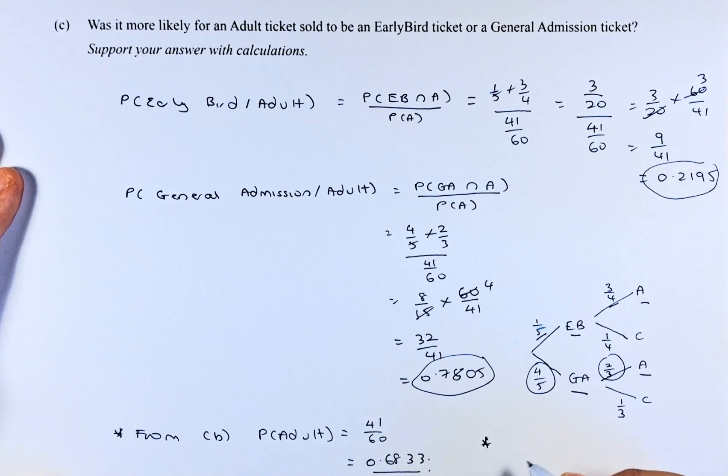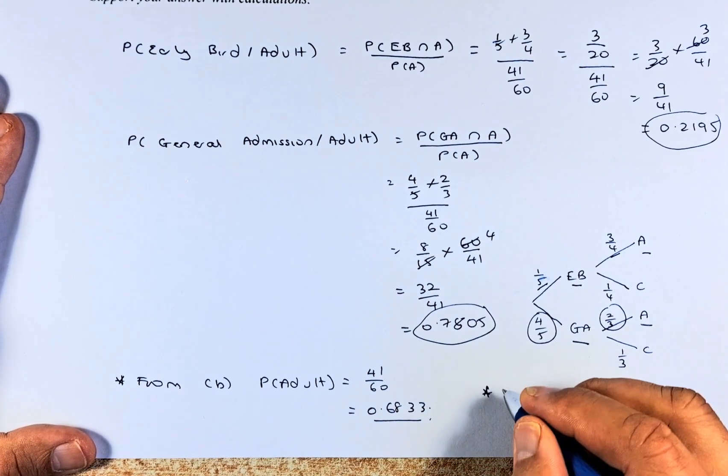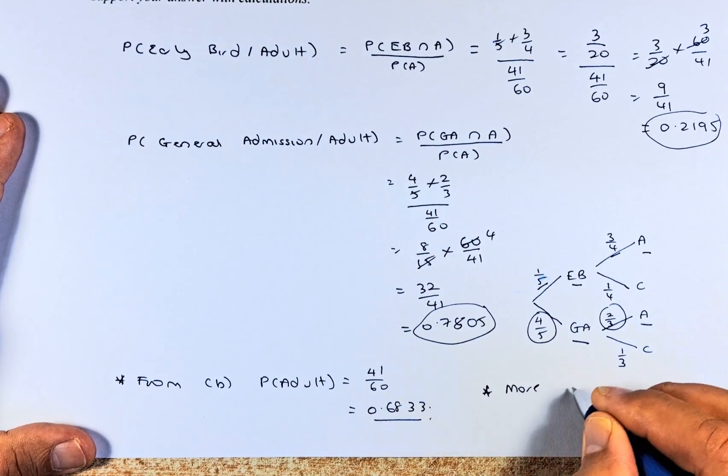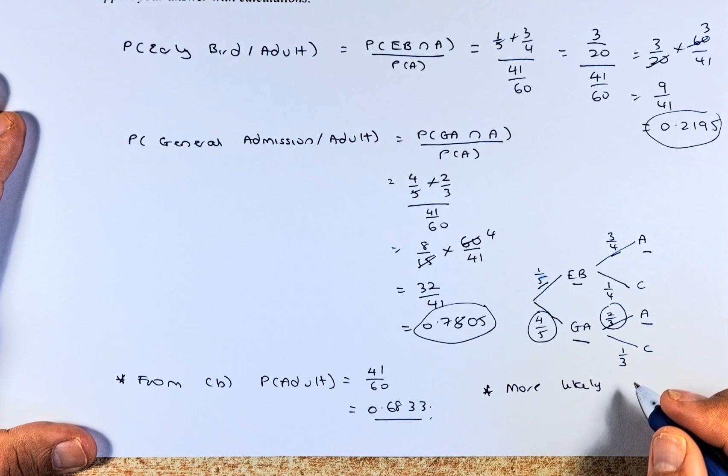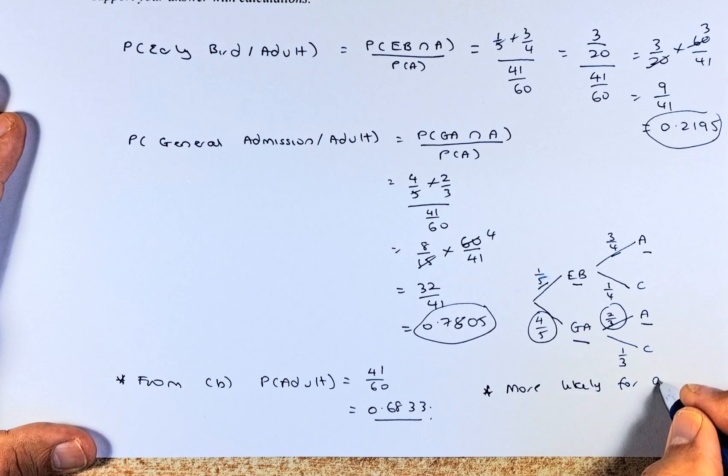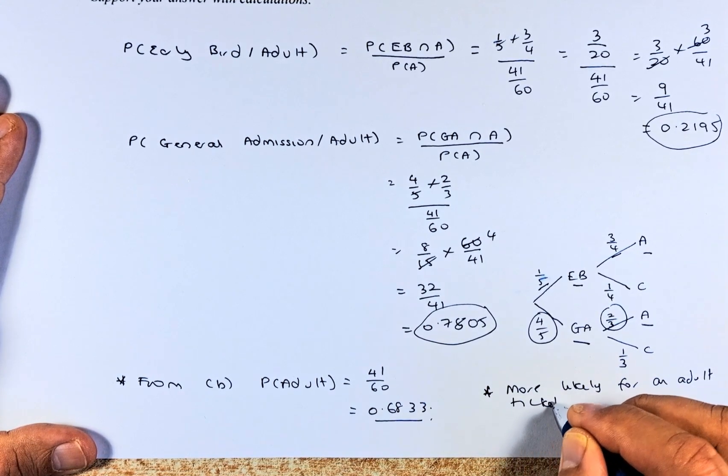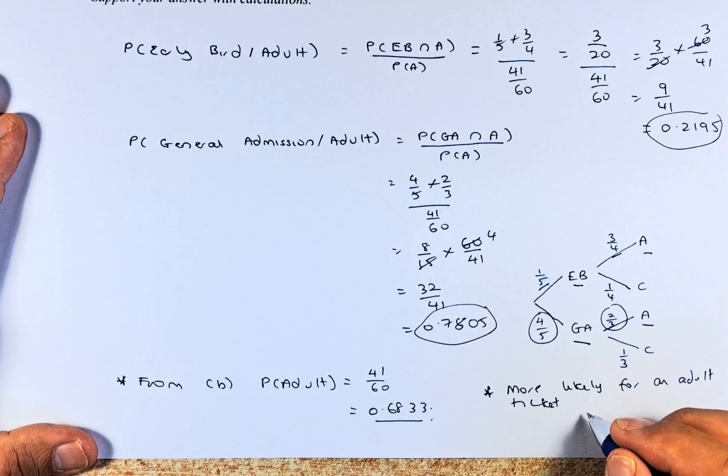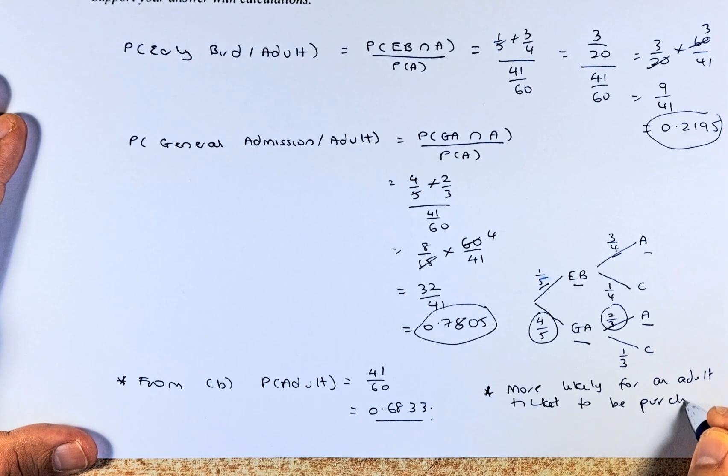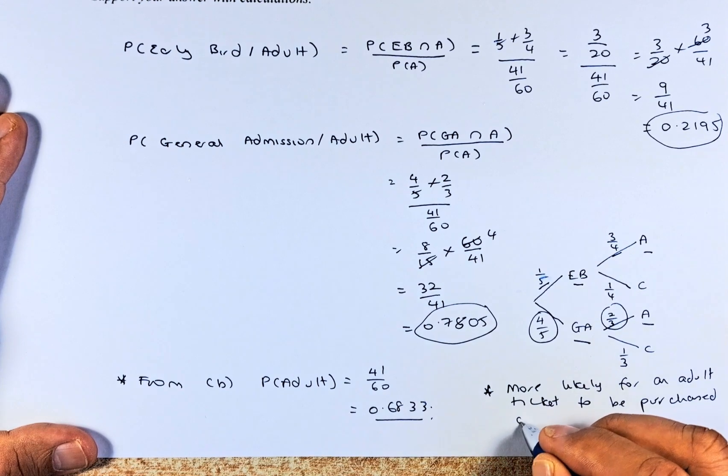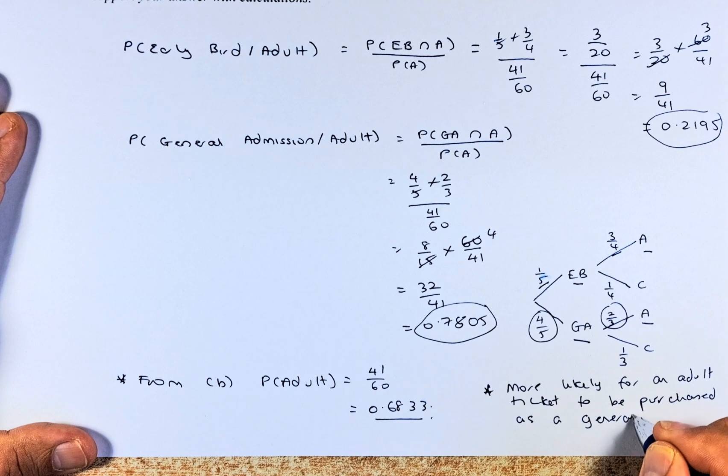The answer is: it is more likely for an adult ticket to be purchased as a general admission ticket.